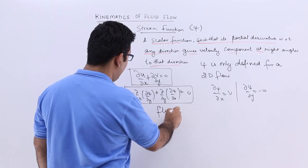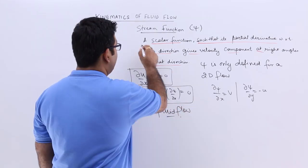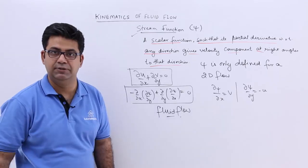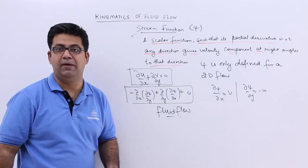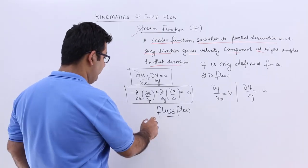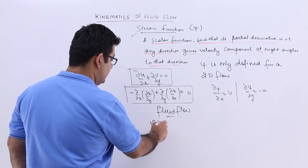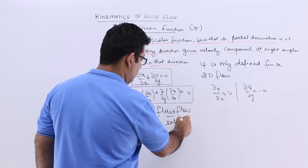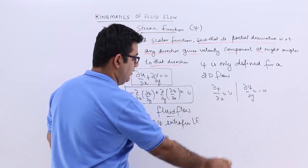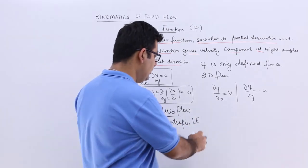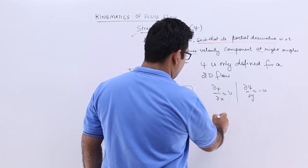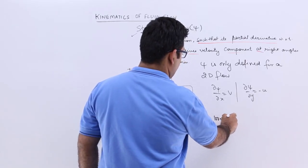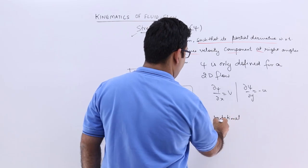That is, the fluid is definitely going to flow if the stream function exists. It might be rotational or irrotational, but if psi satisfies the Laplace equation, then yes, the flow has got to be irrotational. So make a note of that.